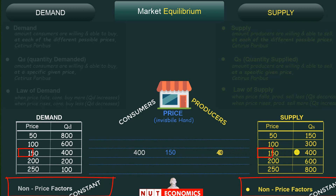At any other price, quantity demanded and quantity supplied are different. This is the only unique price where quantity demanded equals quantity supplied. Free market economic theory tells us that you don't need to do anything — you can start with any randomly chosen price and it will automatically gravitate towards 150, giving you this nice equilibrium of no shortage and no surplus.